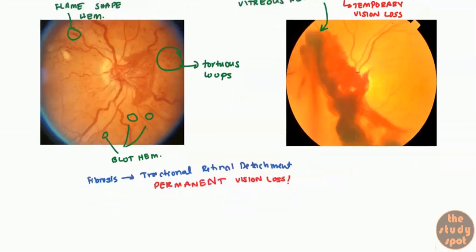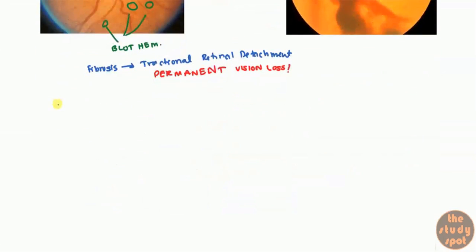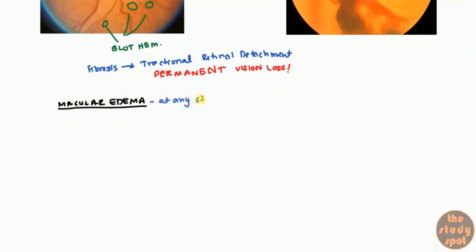You can also produce macular edema at any stage — this can happen at either the proliferative or non-proliferative stage. Macular edema will also be one of the causes of vision loss, because the macula is very important for vision.